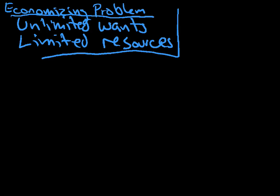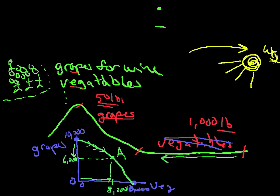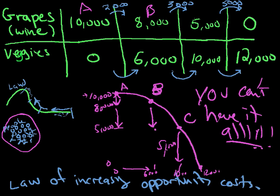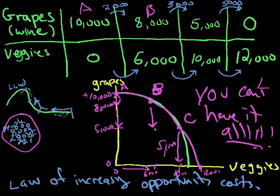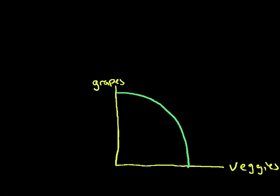Just a few things. Remember, it's all about the economizing problem, unlimited wants and limited resources. It's all about this fact that not everything is good at doing everything else. This land is good at vegetables, this land is good at grapes. This is what the basis of all economics is, not just for this production possibilities model. And now this particular thing is all about detailing the economizing problem, detailing unlimited wants and limited resources. And you end up really with this model right here.